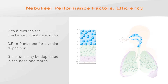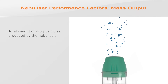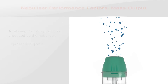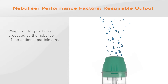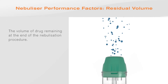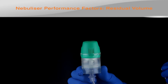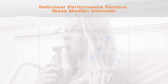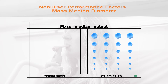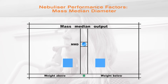Particles larger than 5 microns may be deposited in the nose and mouth, resulting in the drug being swallowed. Mass output is defined as the total weight of drug particles produced by the nebuliser, expressed in grams per minute. Respirable output is the weight of optimum-sized drug particles produced, also expressed in grams per minute. Residual volume is the volume of drug remaining at the end of nebulisation, which may be minimised by tapping the cup when the nebuliser begins to splutter. The mass median diameter (MMD) is defined as the point where half the mass of nebulised aerosol is in droplets larger than the MMD and the other half are smaller.